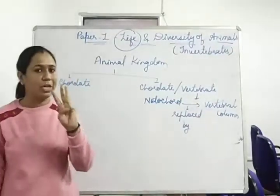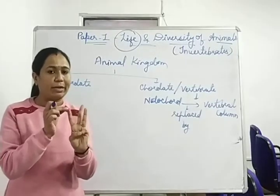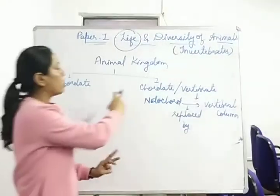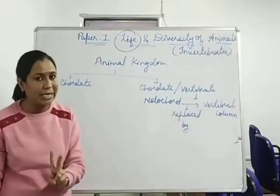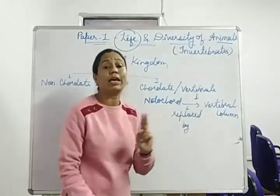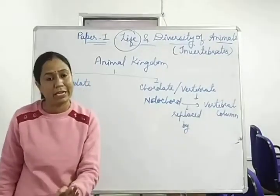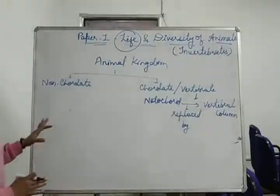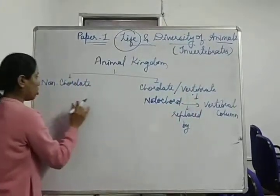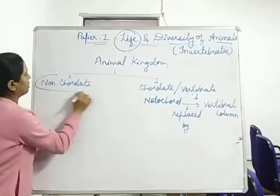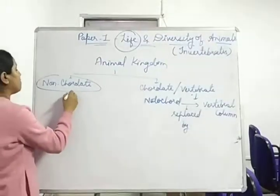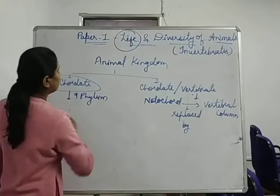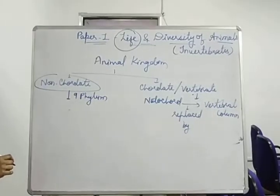So those animals in which notochord is replaced by the vertebral column are called vertebrates. I hope these terms are now clear. Notochord absent → non-cordate. Notochord present → cordate. Notochord replaced by vertebral column → vertebrate. We will concentrate in first year on non-cordates. Non-cordates are further divided into nine phyla.